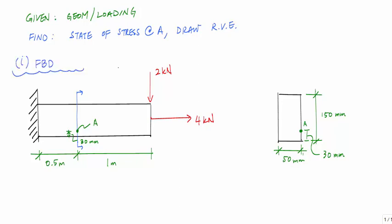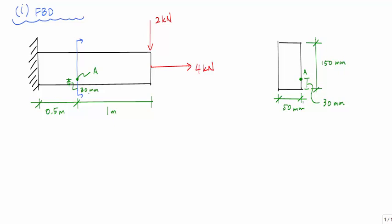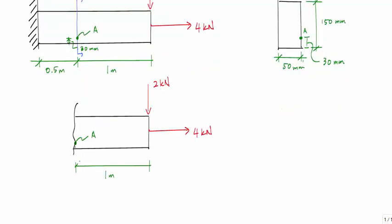The first thing I need to do is draw a free body diagram, then calculate the internal loading at this cut, because that's where point A is. Making the cut at A and taking the right side, the internal loads in 2D could be a normal force, a shear, a moment, and even a torsion. I've used a positive internal sign convention where moments cause compression at the top, internal shears are positive upwards on the right, and normal forces are away from the cut, assuming tension.